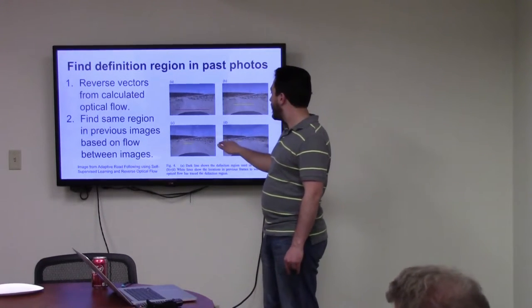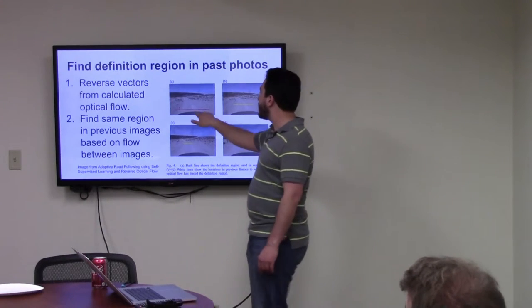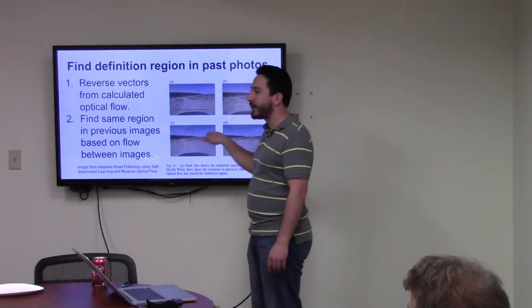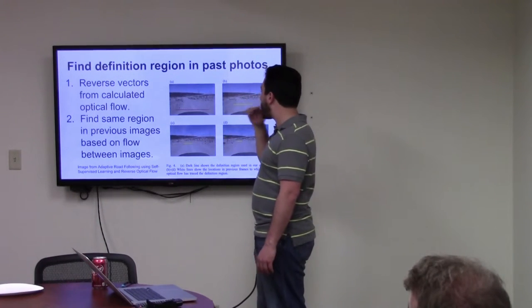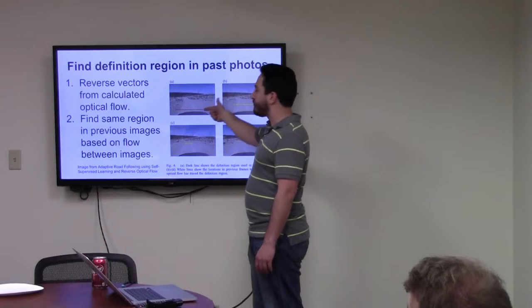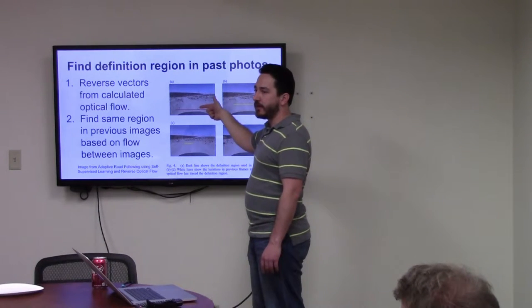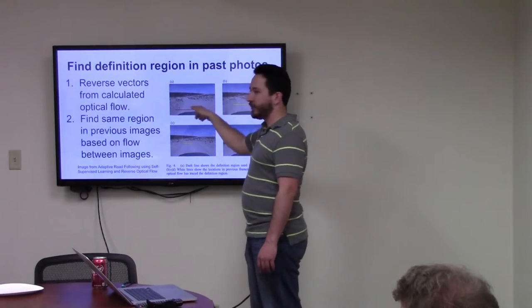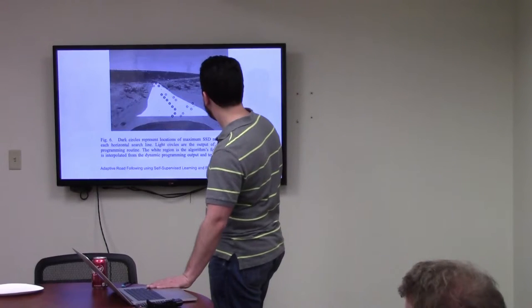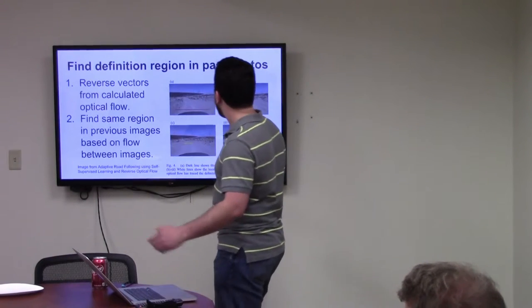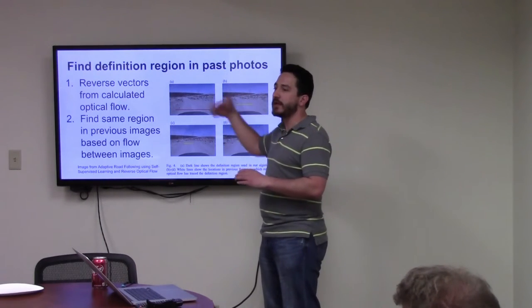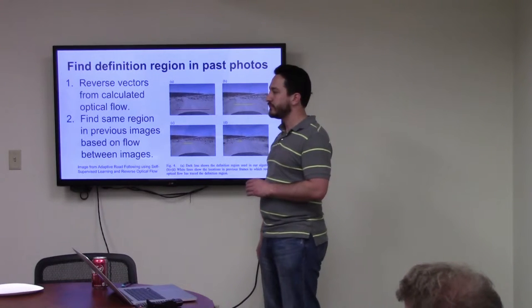So they reverse that vector that they had that defined going from here to here, and they use that to define this definition region must be here based off of that optical flow that they had. So that's all they're saying is they take the optical flow, they reverse it, and then they look for the location that they previously were in in the previous image. Because they're trying to find this reference region in each spot along the way.